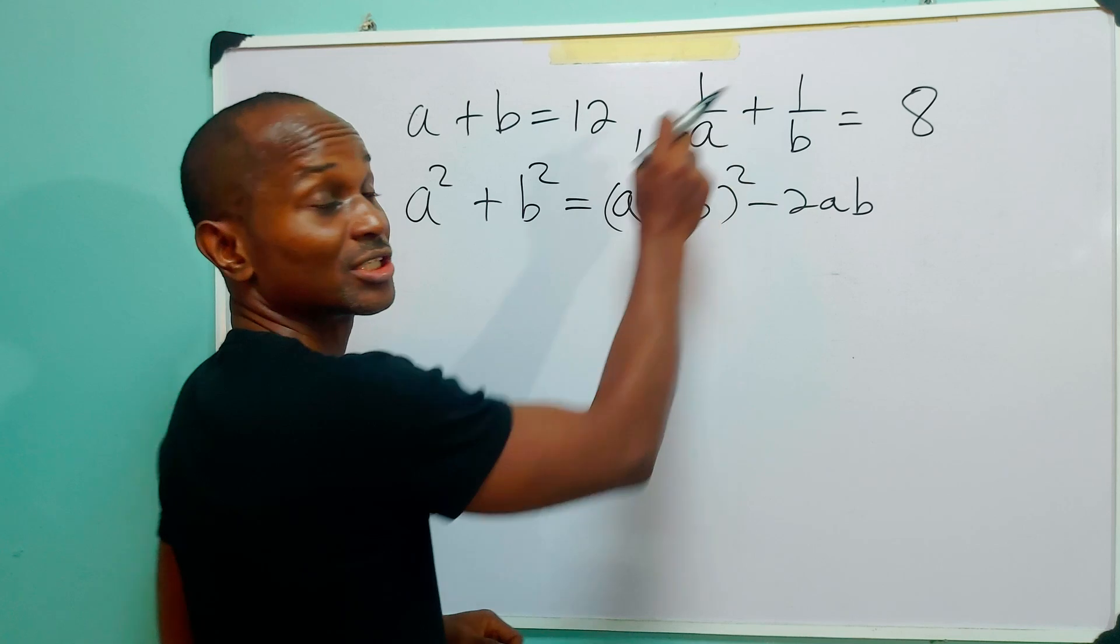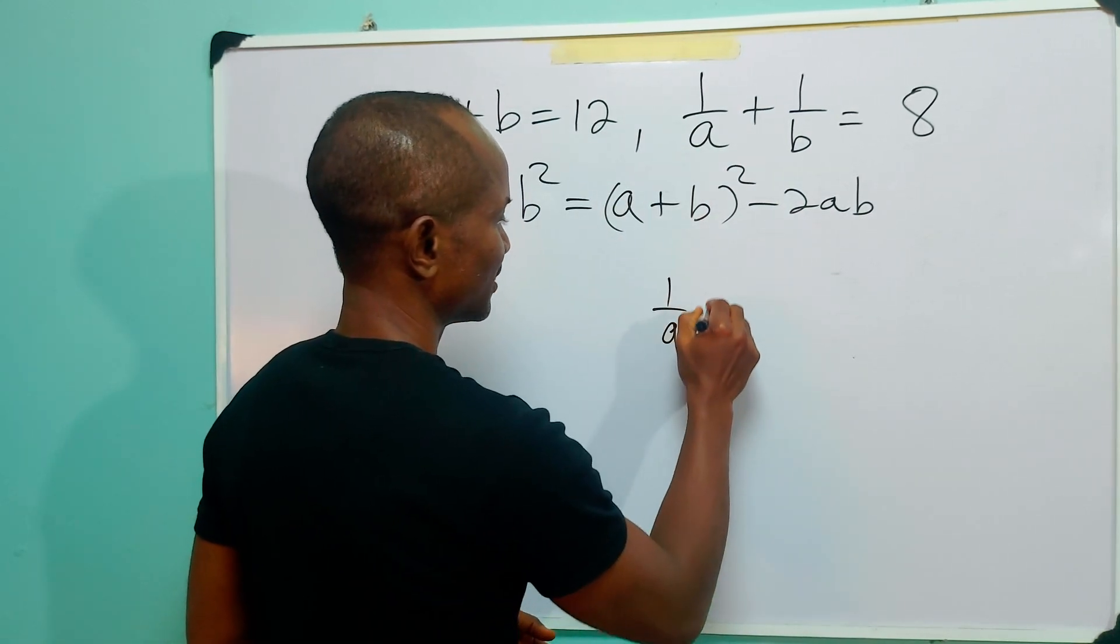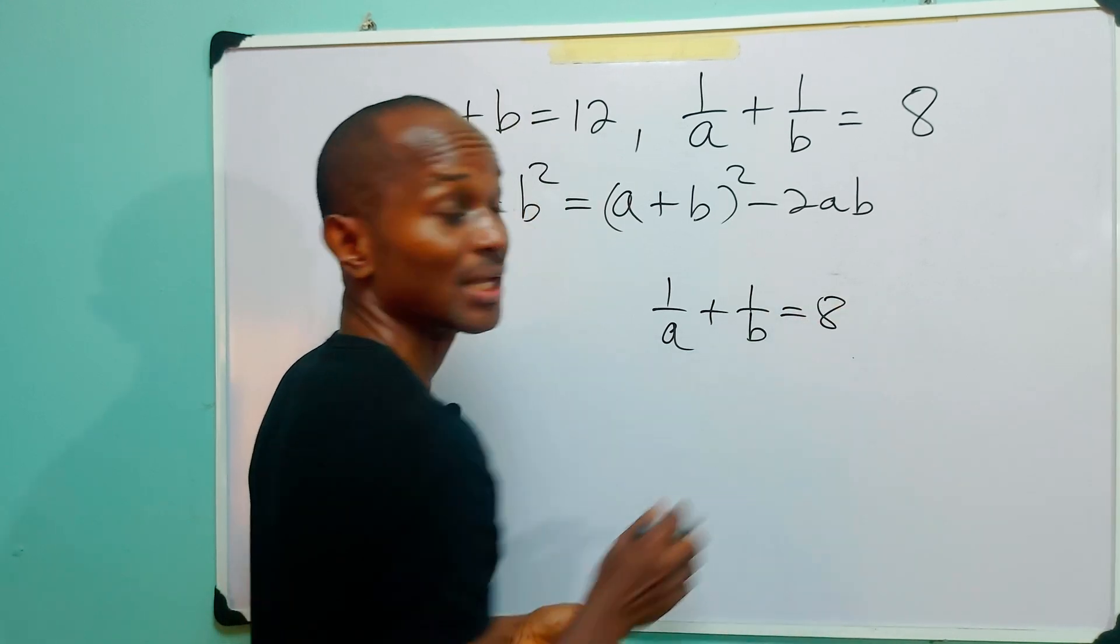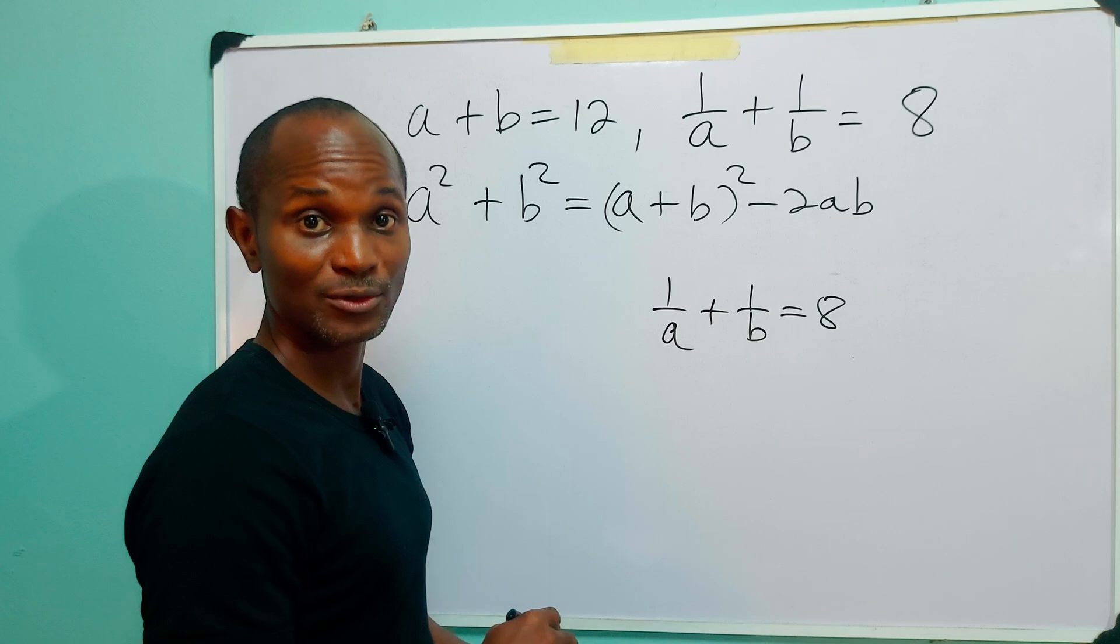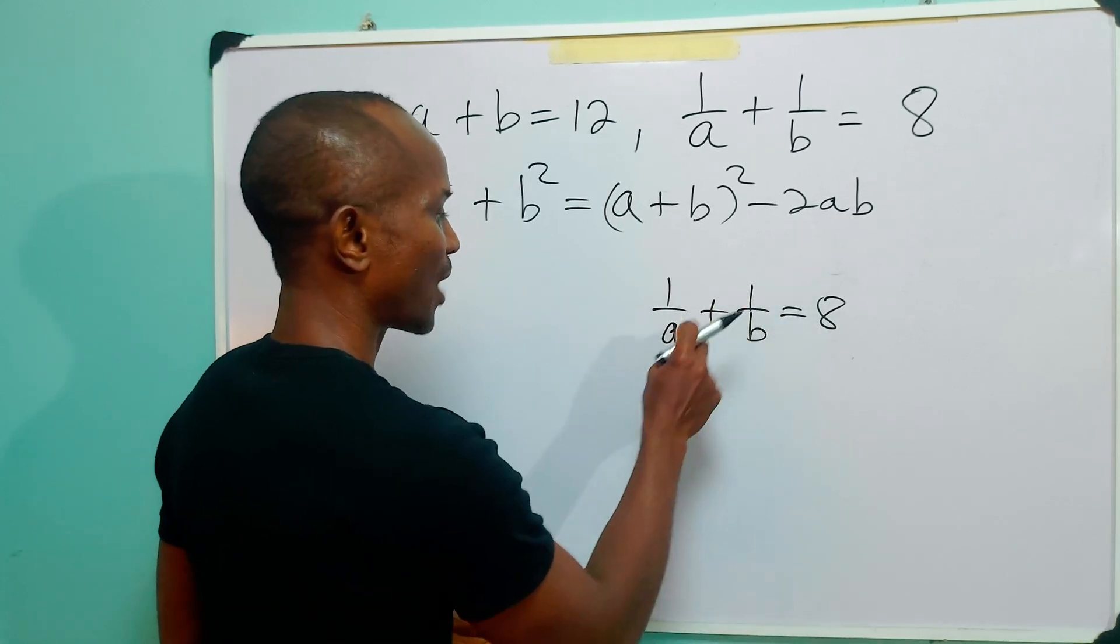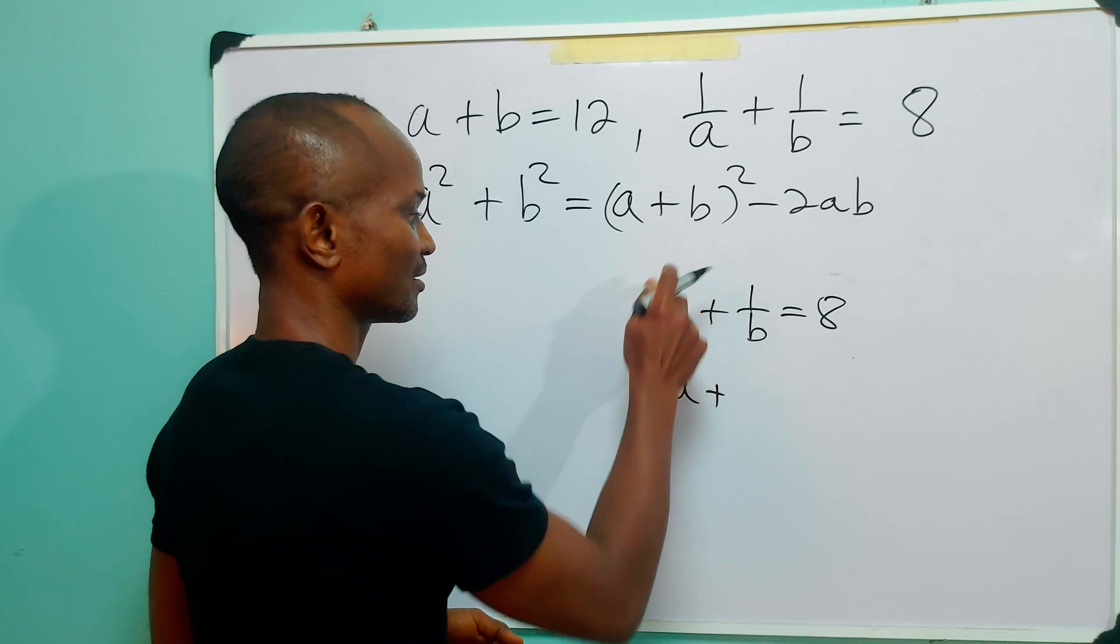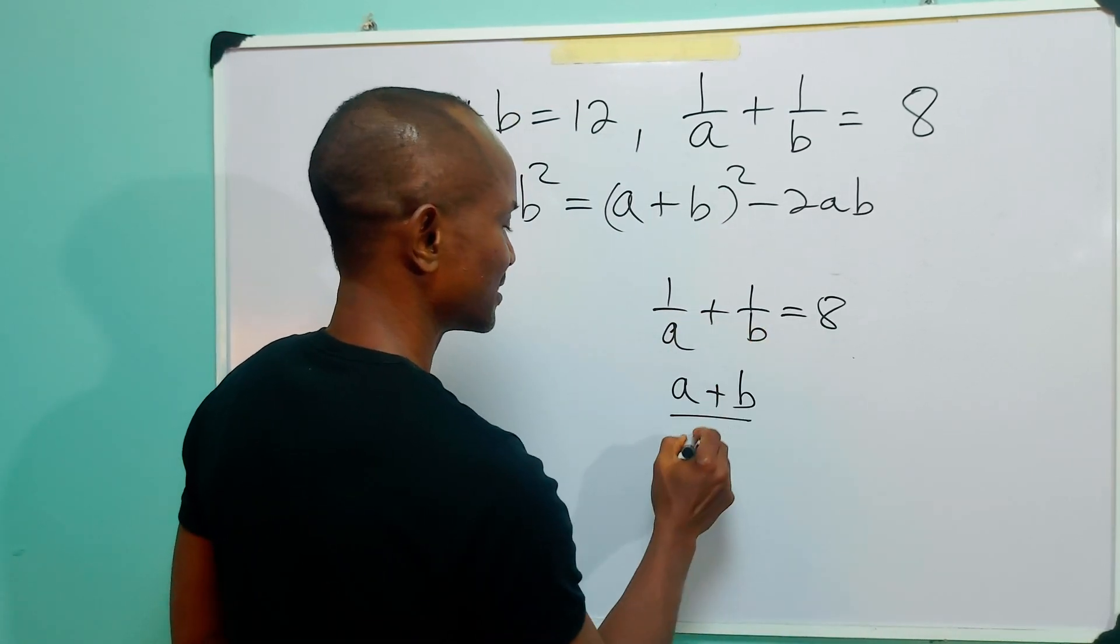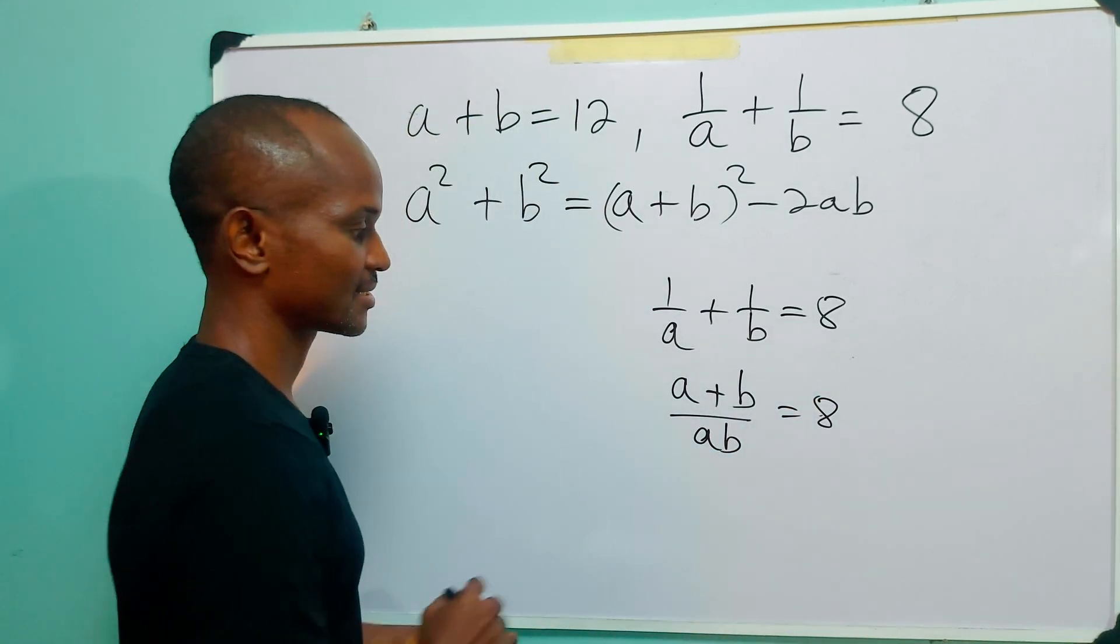Next let us look at this condition that we were given. We have two fractions, 1 over A and 1 over B, and they both sum up to 8. We can combine these two fractions into one single unit by multiplying 1 by A, so we have A plus, multiplying B by 1, so we have B, divided by multiplying this by this, and that is AB. And this is equal to 8.